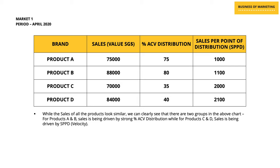However, when you look at the percentage ACV distribution and SPPD columns, there seem to be two groups of products. The first group is product A and product B, which has high percentage ACV distribution — they've got really good distribution. The second group, product C and product D, have a much lower percentage ACV distribution. At the same time, the first group A and B has low velocity or SPPD in the range of one thousand to eleven hundred, while the second group C and D has a very high velocity. Simply put, products A and B are being driven by distribution, while product C and D are being driven by velocity.